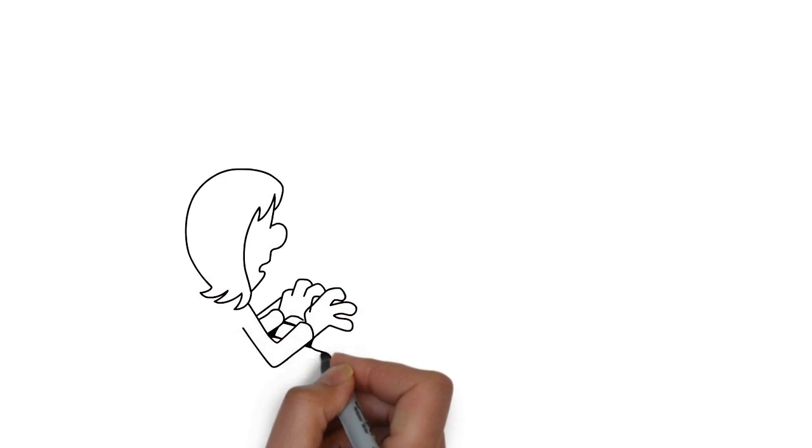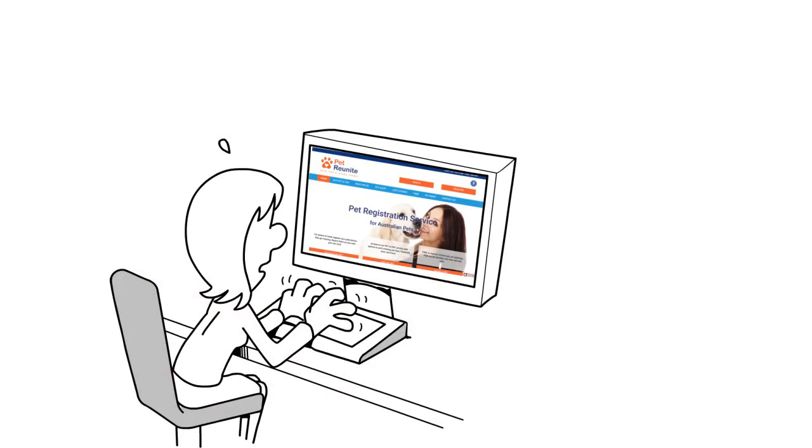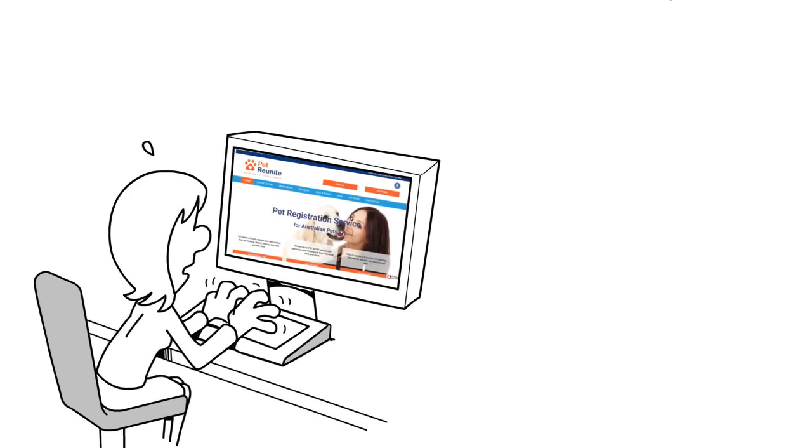If your pet gets lost, simply visit PetReunite.com.au. Click on the Missing Pet Alert button. Your missing pet details will be listed on our website and Facebook group.